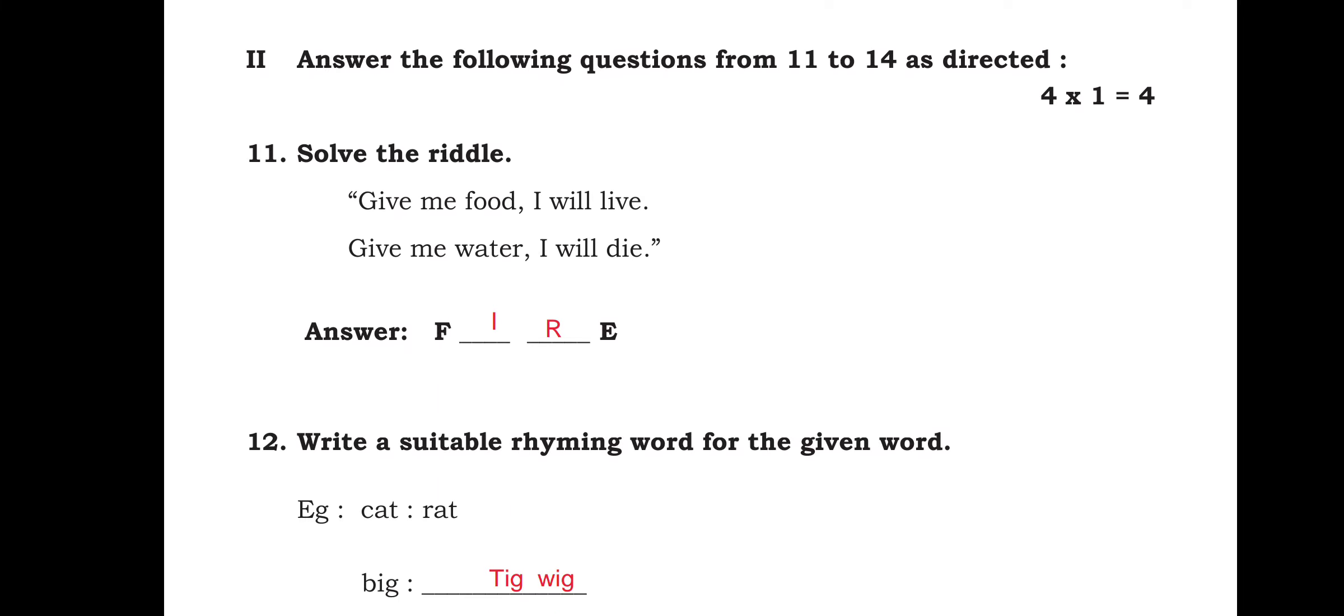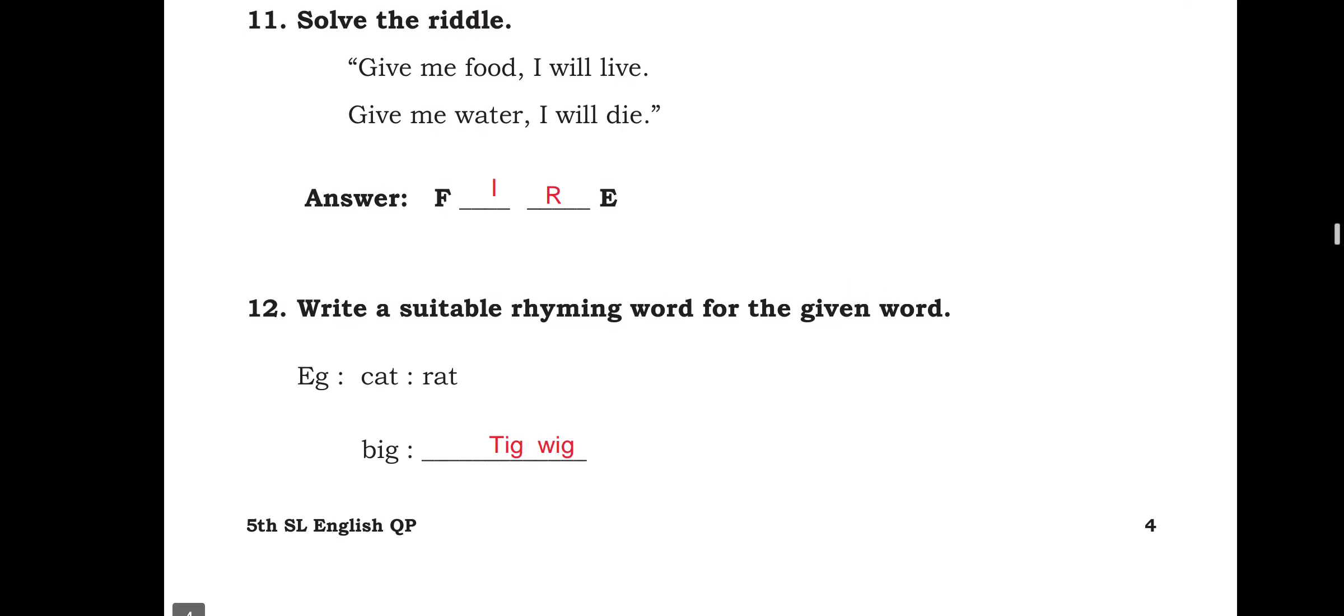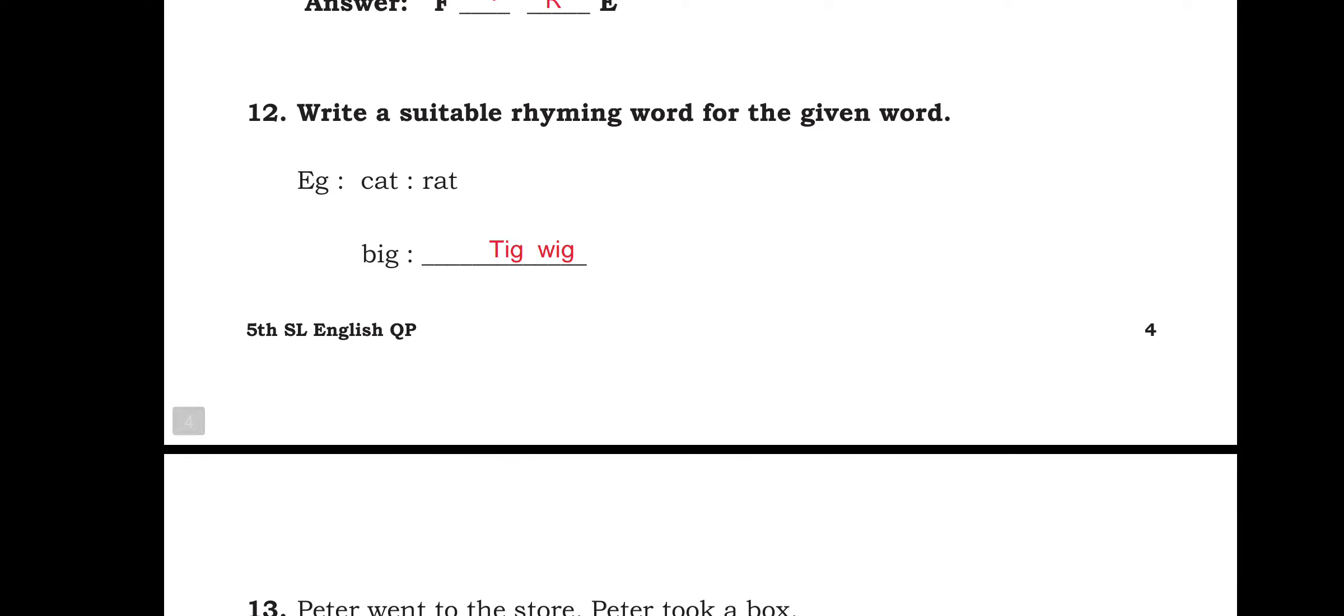Answer the following question from 11 to 14 as directed. Solve the riddle. Give me food, I will live. Give me water, I will die. So the option is fire, F-I-R-E. Write a suitable rhyming word for the given word. Cat, rat. Tick, wig.